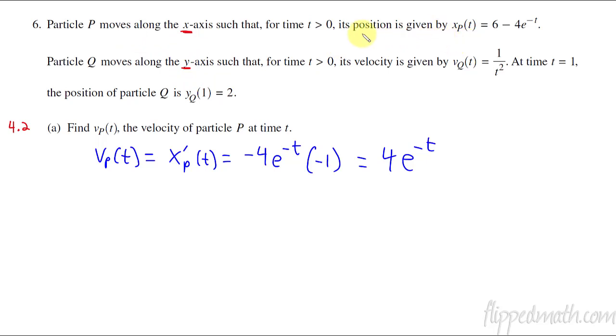But for particle P, they give us position, while for particle Q, they give us velocity. So we just need to make sure we track that as we're working through these problems. They also give us an initial condition here, where at time 1, it's at position 2 for particle Q.